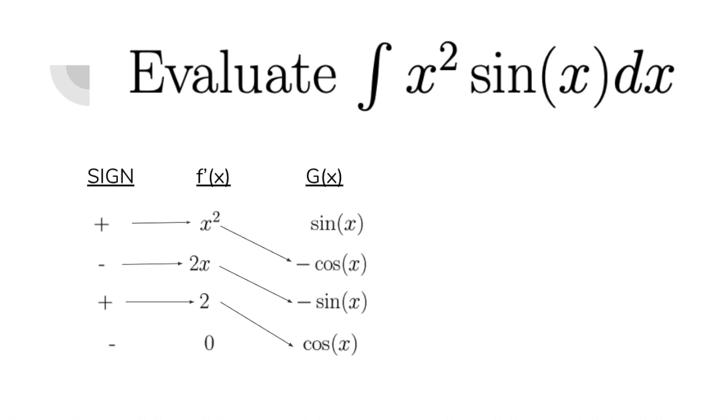So I basically combine these terms: a positive sign, an x squared, and a negative cosine of x. Think of these arrows as multiplication. And the sign is plus 1 or minus 1. So plus 1 times x squared times minus cosine of x will give me negative x squared cosine of x.